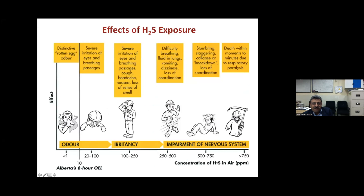At lower concentrations, H₂S only produces its distinctive odor. As concentrations rise, obnoxious effects increase: irritation to eyes, breathing passages, cough, headache, nausea, and loss of sense of smell. At concentrations beyond 250 ppm, it affects the nervous system, causing difficulty breathing, fluid in the lungs, vomiting, dizziness, loss of coordination, stumbling, collapse, and knockdown.